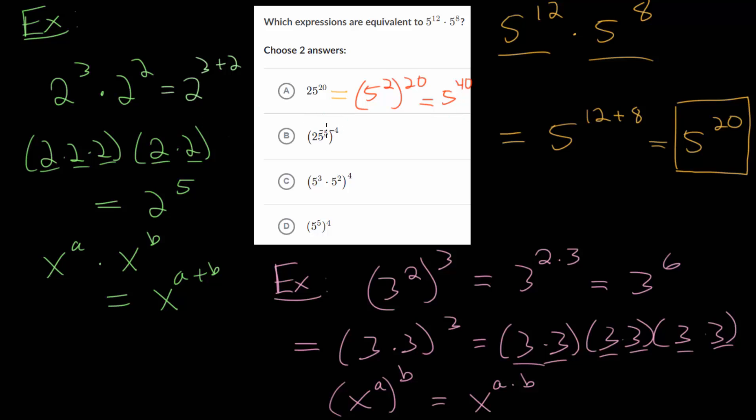Likewise, this one, an exponent to an exponent, you can multiply. So this is 25 to the 20th. But we already know that's not going to be correct since that's equal to 5 to the 40th. So process of elimination tells us it has to be c and d, but let's make sure those actually make sense.